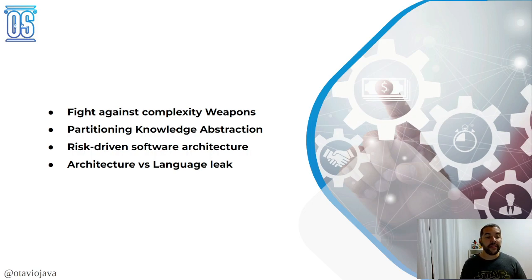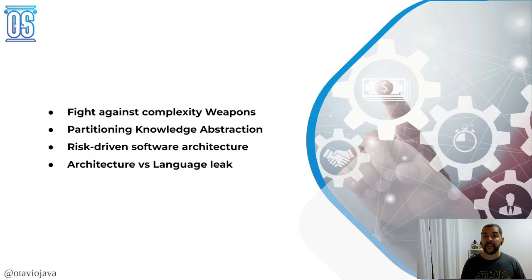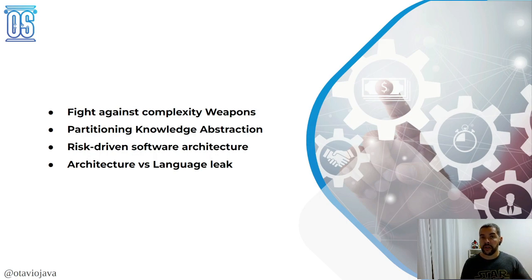This book also mentions the architecture and the language gap. What does that mean? Especially when we talk about software architecture, we talk about several aspects that the language does not support. For example, we don't talk about Java — we talk about packages. We talk about domains, modules, and layers, but we don't have a 'layer' keyword inside Java. We don't have a 'domain' keyword inside the Java language. Right now it has Java modules, but the point is there is a gap — a leak between the programming language and software architecture.